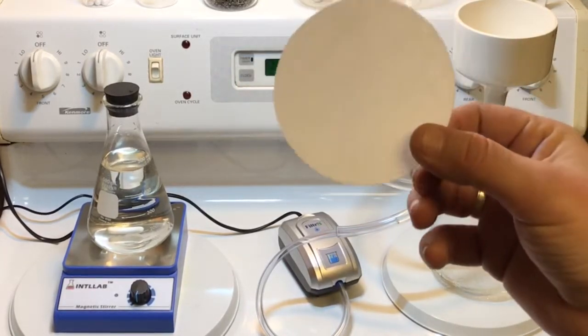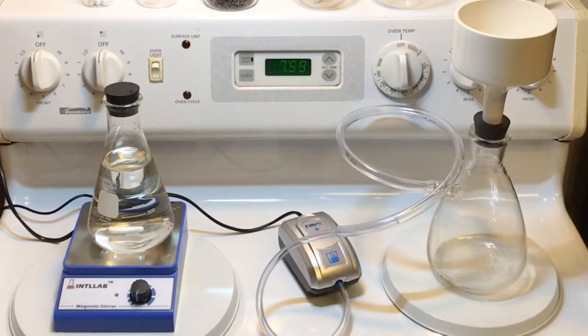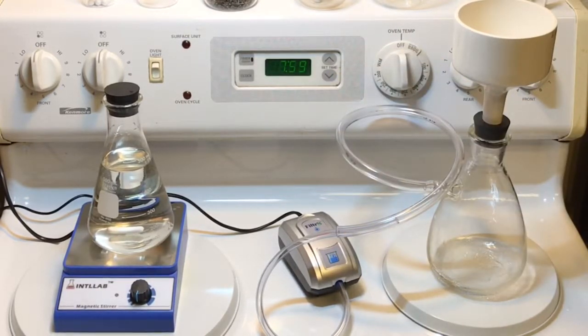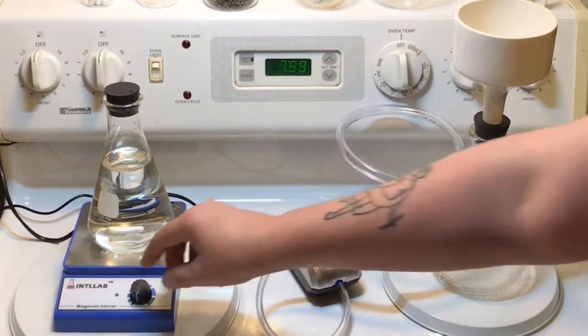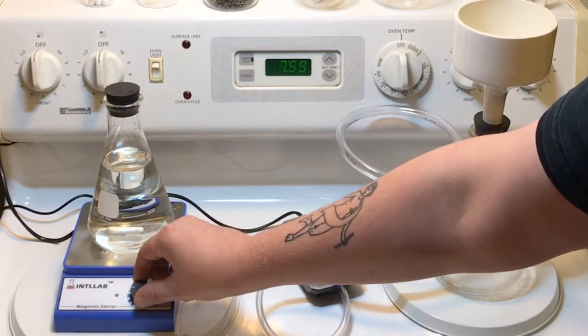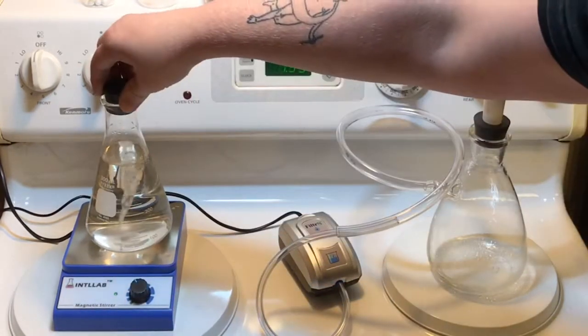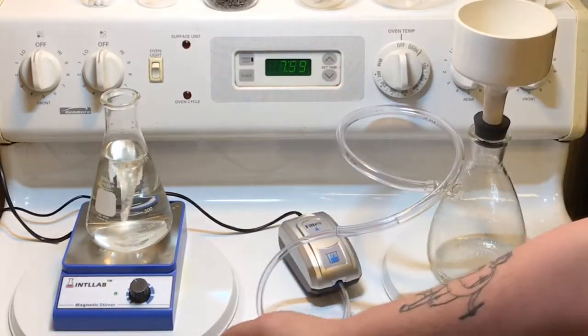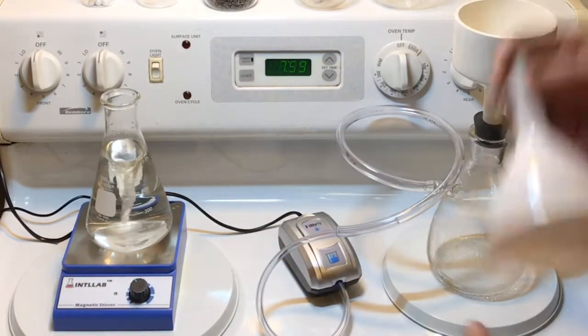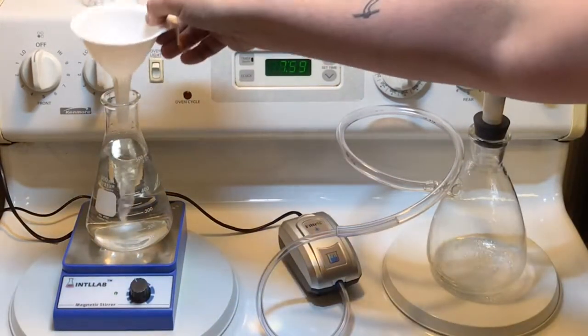Now we're ready to start stirring our witch hazel and start adding in some of our flowers. We just turn on our stir plate like this, just get a real gentle stir going on. That thing makes a really nice funnel.